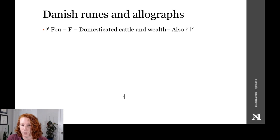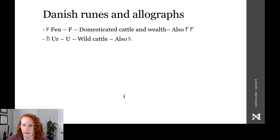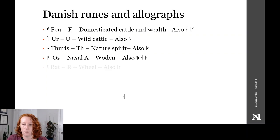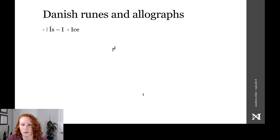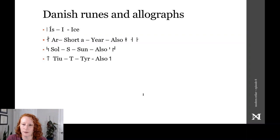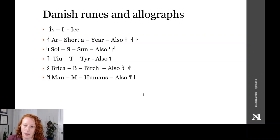Ur, or wild cattle, after. Toris, or nature spirit, third stave. Oos, the god Woden, is above it. Rot, the wheel, is written in the end. Kaun, the ulcer, divides it. Hoagil, hail, has nought — need. Ice, year, and sun. Tew, the god Tyr. Brike, birch, and man in the middle. Lagu, water, shining. And Ir, the U, has it all. So that's what they called their runes.